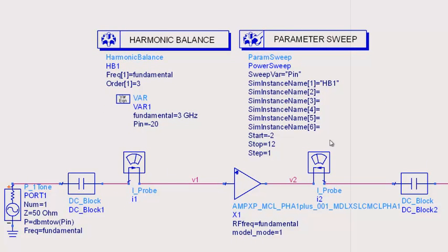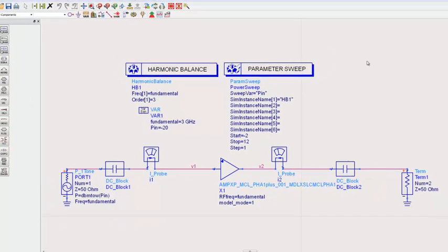The model mode is set to 1, and the power range is set to sweep from minus 2 to 12.